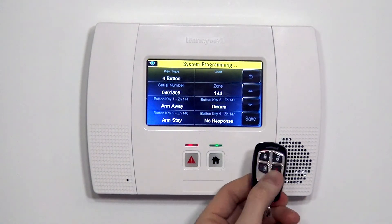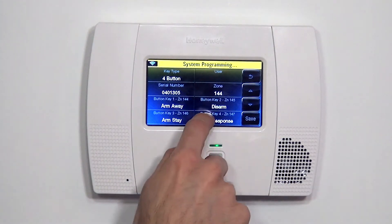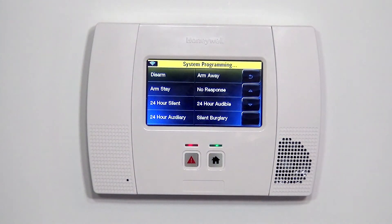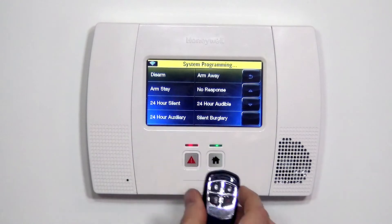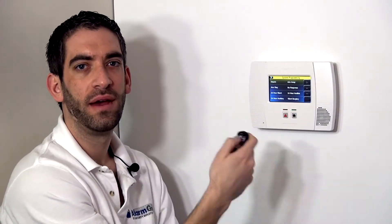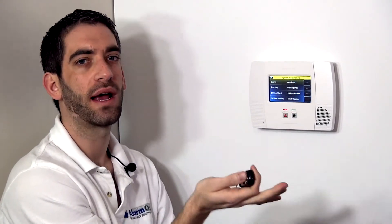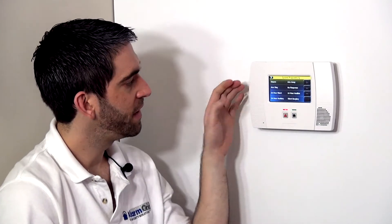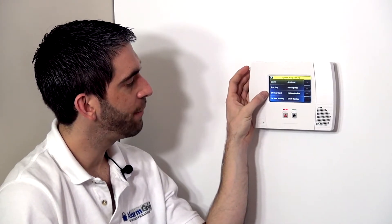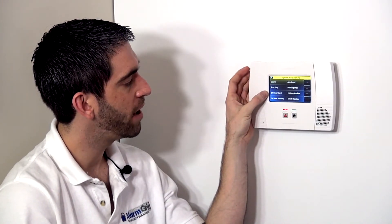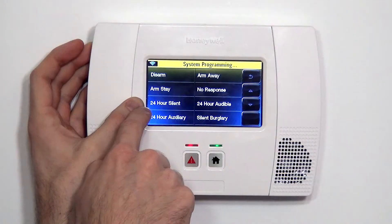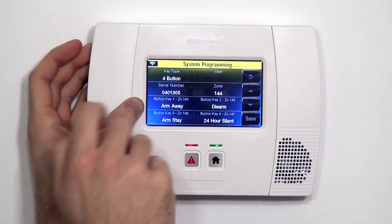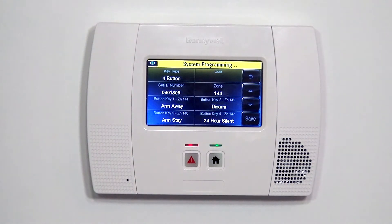So we're going to leave this in our nightstand. That way, right before we go to bed, we can arm stay, in the morning we can disarm, and if we ever needed to walk out of the house, we can take it with us and go arm away as well. In the middle of the night, if we ever heard something and we wanted the police to come out right away, and we didn't want the person in the home to know we've activated it, we can select that for a 24-hour silent.